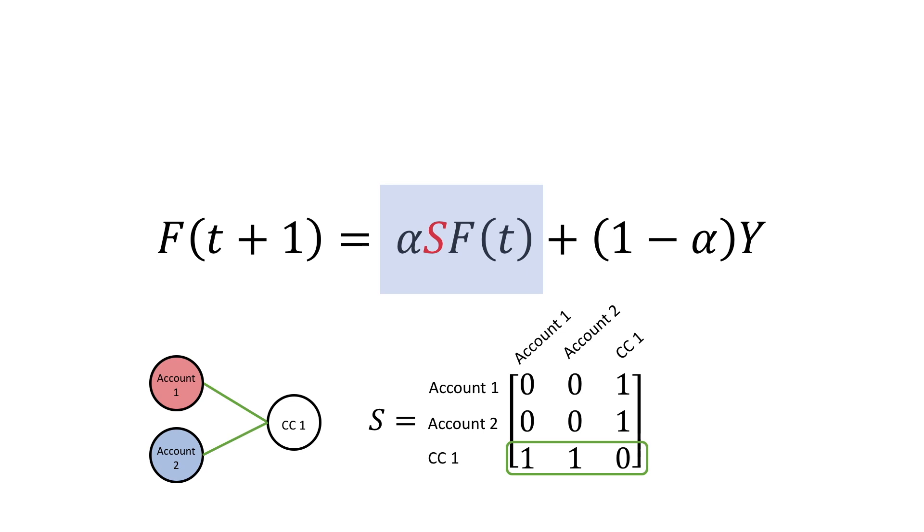Since our connections don't have direction, our matrix is symmetric, meaning the i-th row is equal to the i-th column. If your connections did have directions, like Twitter followers, then you wouldn't need to maintain the symmetry.